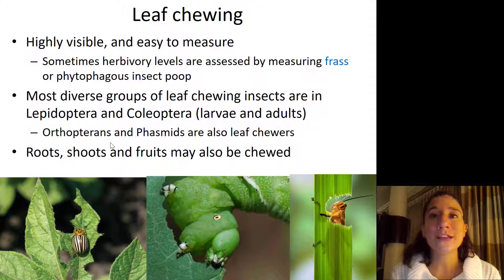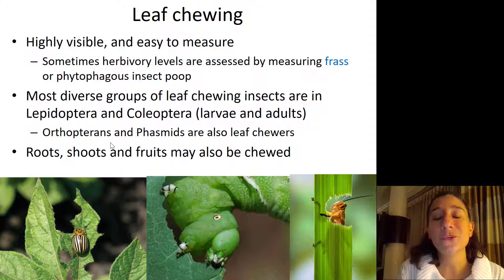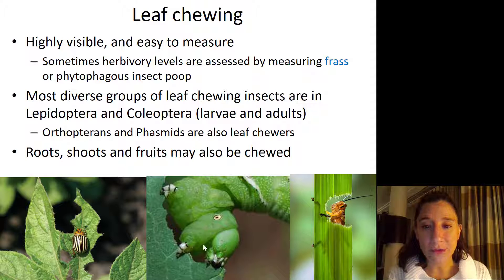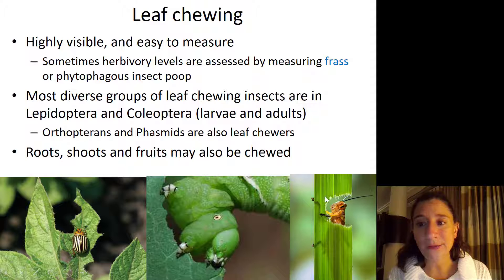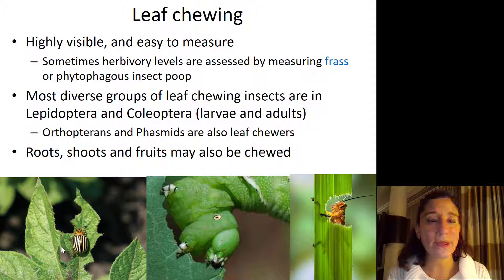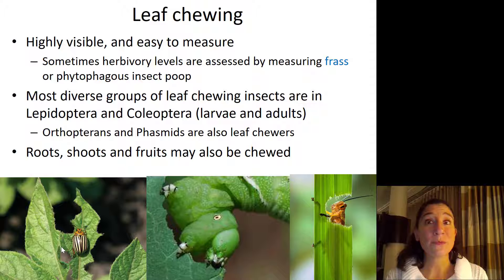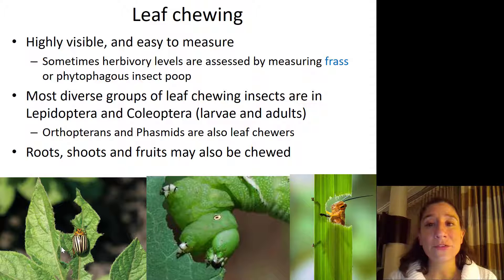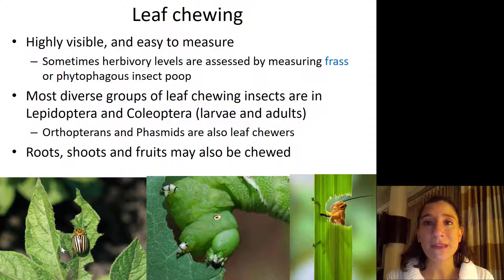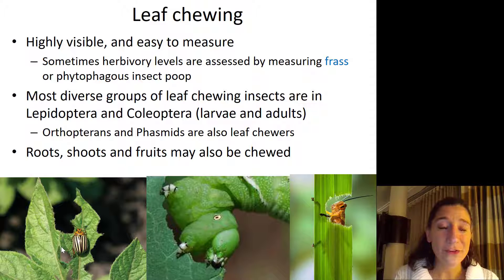When we think of a phytophagous insect, usually what pops into mind first is a very hungry caterpillar going to town, gnawing on some leaves, or a grasshopper chewing on grass, or Colorado potato beetles eating the leaves of a potato plant. Leaf chewing is highly visible and very easy to measure, which is probably why we think of it first. Sometimes herbivory levels are assessed not only by the damage to the leaves, but also by measuring the amount of frass — bug poop — on or around the plants. Fun fact.